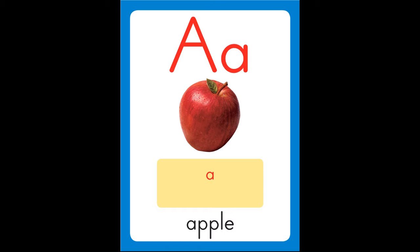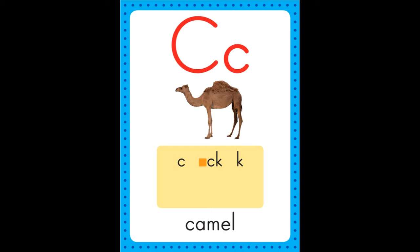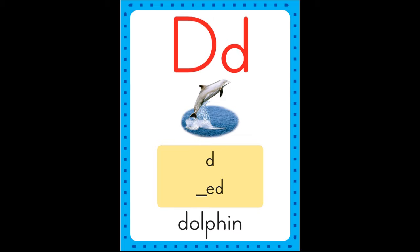A is for apple, a-a-apple. B is for bat, b-b-bat. C is for camel, c-c-camel.